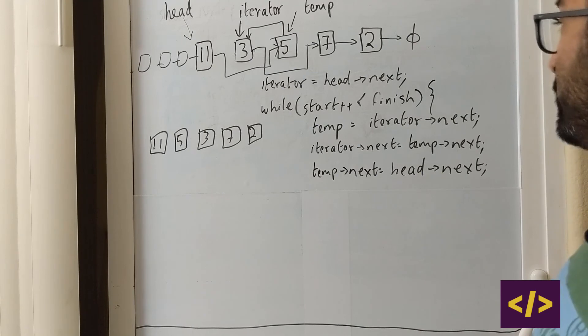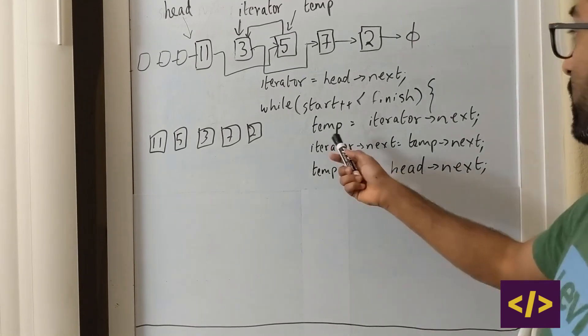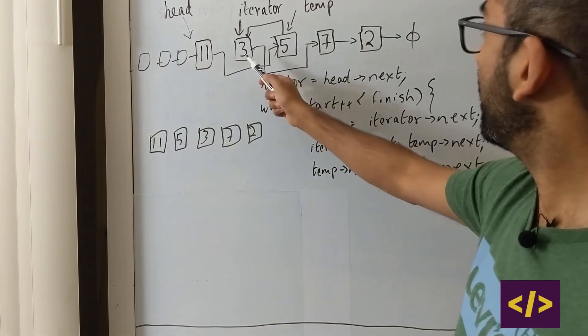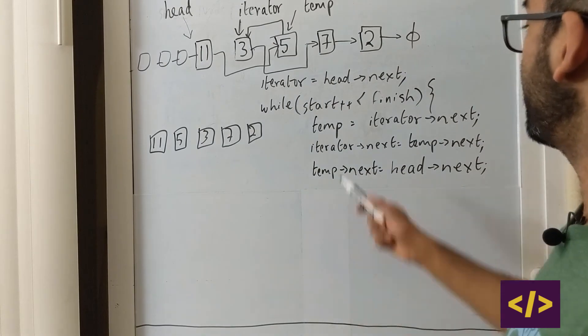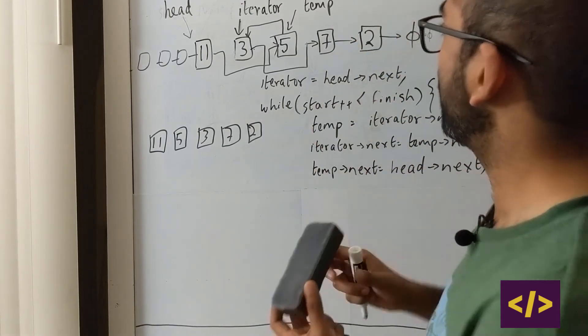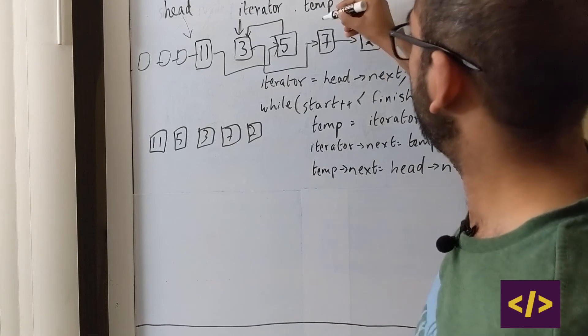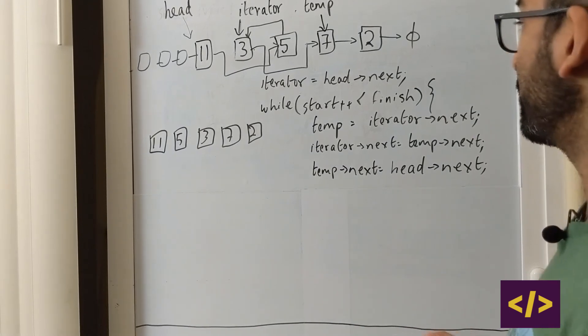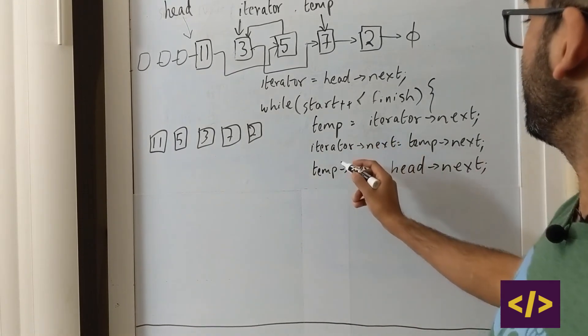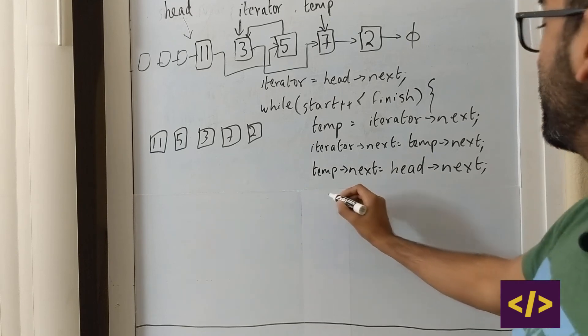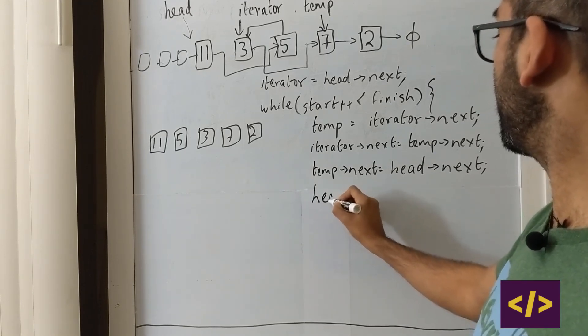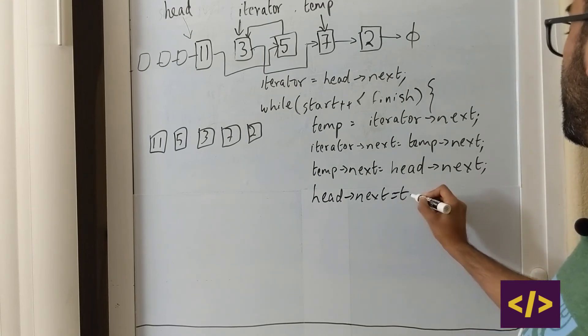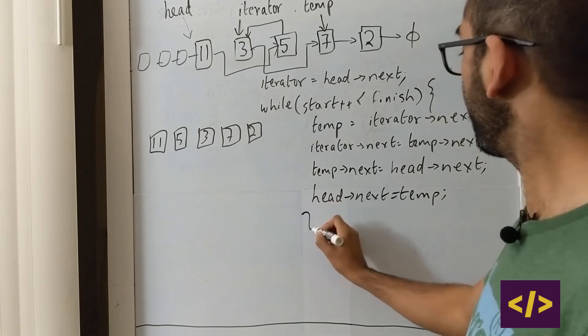Now in the second iteration, what do we do? We're going to do temp is equal to iterator of next. And what is our iterator? Iterator is 3. What is iterator of 3 is next? That is 7. So your temp is now going to point to 7. Yes, you're right. Alright. Let's do the same thing again. What are we going to do? We missed one guy: head of next is equal to temp.